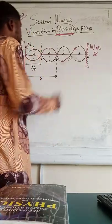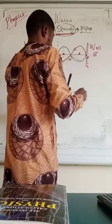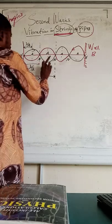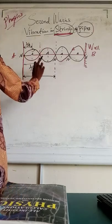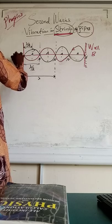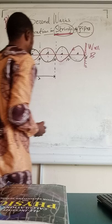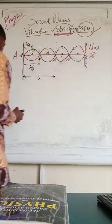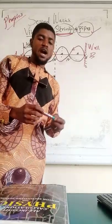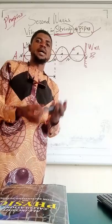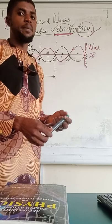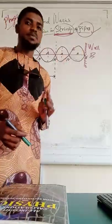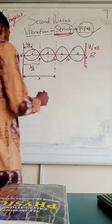We are looking at vibration in pipes. This diagram is very important and I won't clean it until the end of this video. There are two main types of pipes: the pipe that is open at both ends — the trumpet and flute are examples — and the closed pipe. We call them air column vibration.